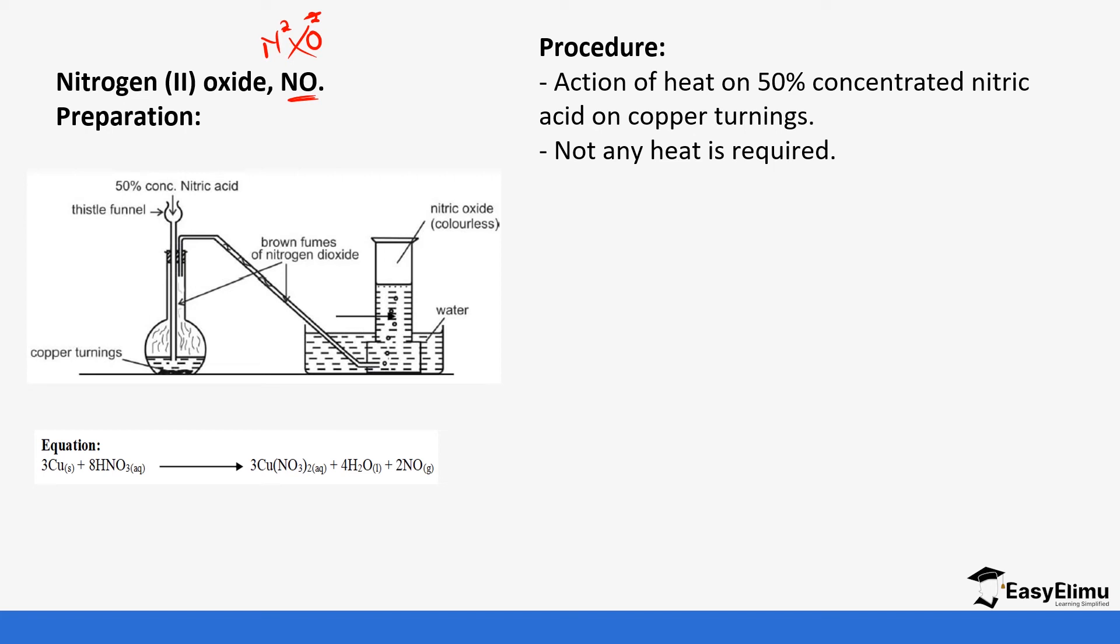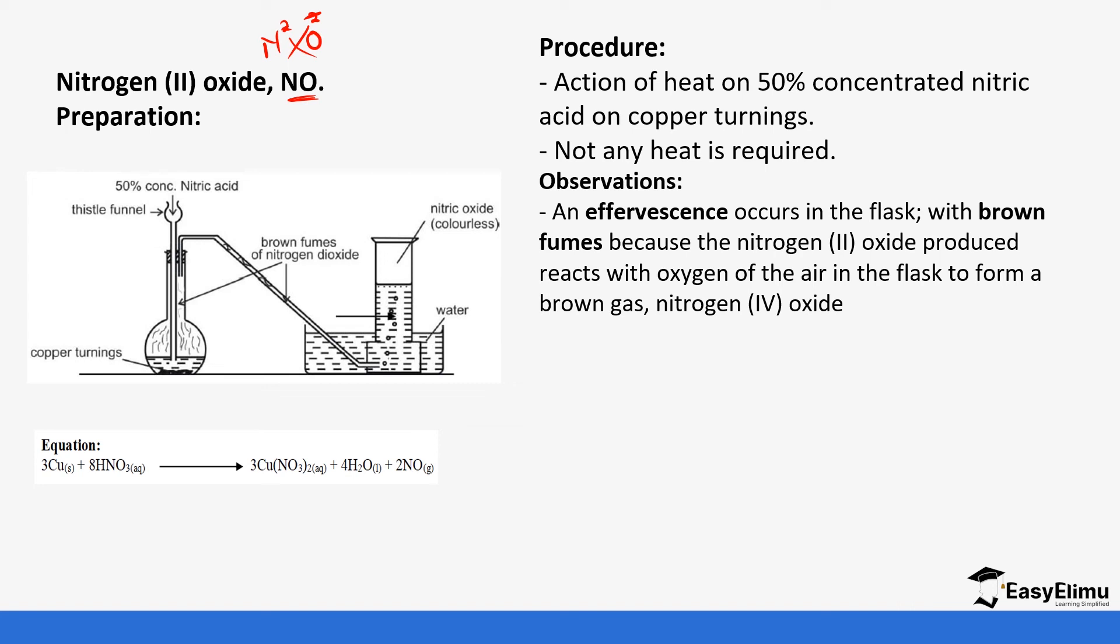There is an oxidation that occurs in this case. Copper reacts to form copper nitrate and nitrogen (II) oxide gas is given off. Some observations from this experiment: when the acid is added to the copper there is an effervescence in the flask, and you see brown fumes. The brown fumes result from the nitrogen (II) oxide gas being produced reacting with air in the flask. The nitrogen (II) oxide quickly reacts with that air to form nitrogen (IV) oxide, and nitrogen (IV) oxide is a brown gas, a brown fume.